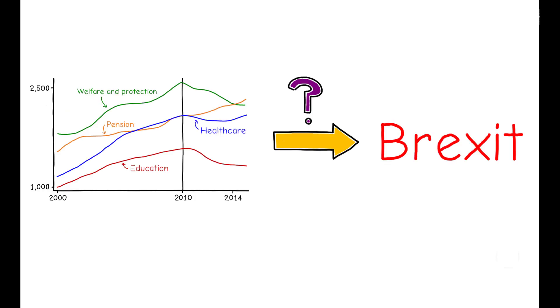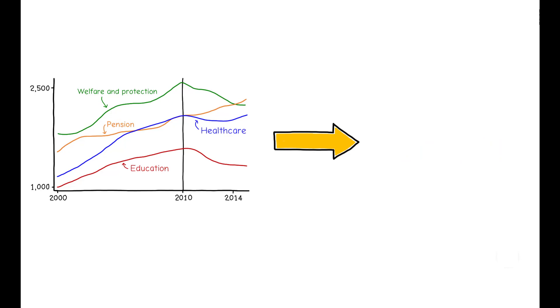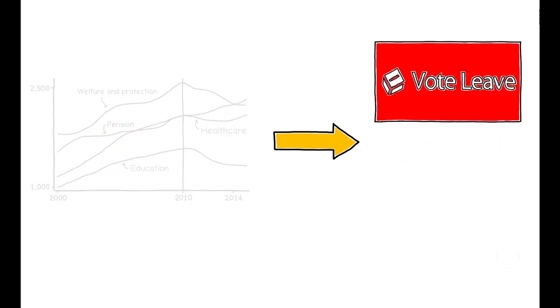How significant are these results? Do they suggest that the government's austerity measures had any meaningful impact on the outcome of the 2016 Brexit referendum? A back-of-the-envelope calculation suggests that absent the impact of the austerity measures, support for the Leave campaign in 2016 could easily have been 6 percentage points lower.